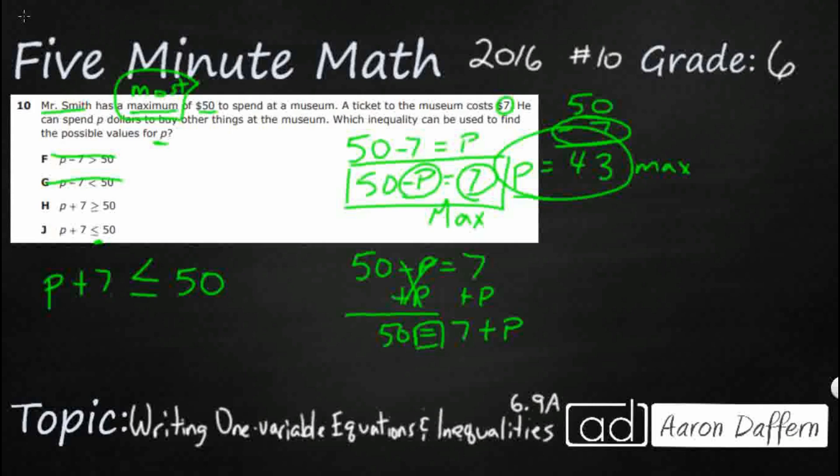So that's what J is saying. H is saying the opposite. You take your P, you add the 7, and now you're going to get more than 50. Well, no, that's not going to work. He's got a maximum of 50 bucks. He can't spend more than that. This says greater than or equal to 50. So now my answer is going to be this J right here.